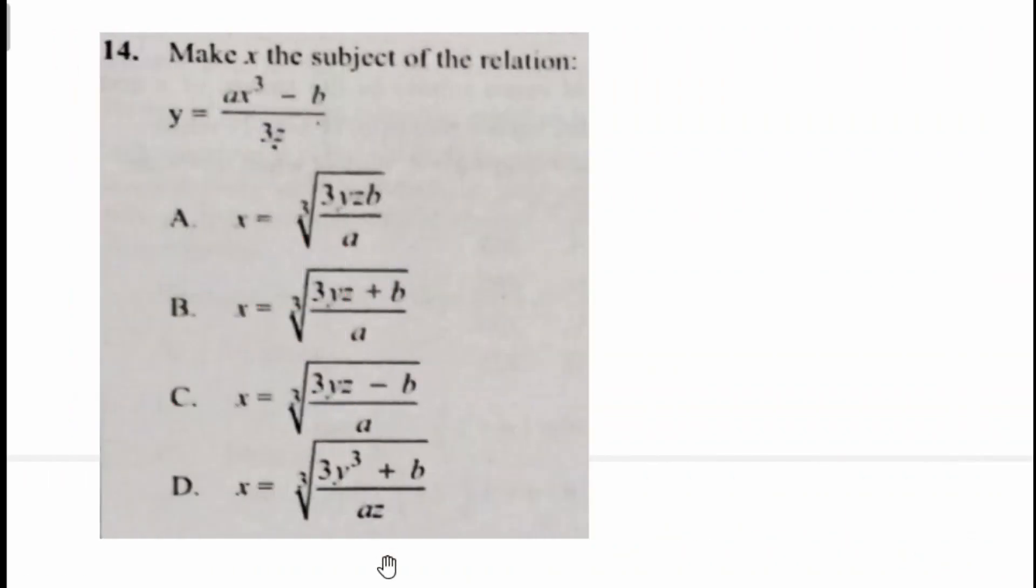Question 14 is simple. We have to make x the subject of the relation here: y equals ax cube minus b all over 3c. So to make x the subject, we need to get rid of the fraction first, and that will be by multiplying both sides by 3c. And that will give us 3cy equals ax cube minus b.